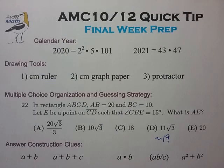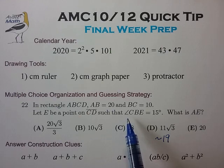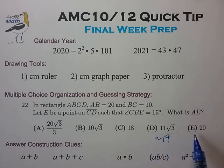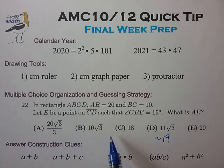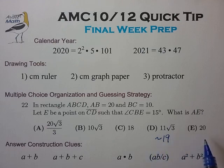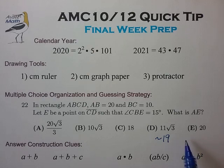Let's talk about multiple choice organization and guessing strategy. The example choices shown are taken from an AMC geometry problem where a rough sketch indicates that an answer lies somewhere near 20. You need to work out that 11 times root 3 is approximately equal to 19 to discover that the correct answer is probably choice D or choice E. At that point, you don't need to evaluate choices A or B because numerical answers in the AMC are always arranged in increasing order — it's really handy to know that. Once you've eliminated down to two choices, and if that's the best you can do, it's definitely worth guessing. I recommend that you guess only after eliminating down to two choices — others recommend three — but whatever you go with, it's important that you decide on your guessing strategy before the test. Don't try to figure this out during the test.